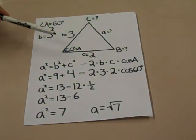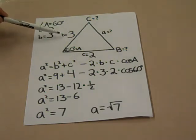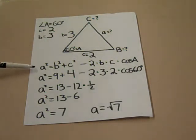Here we are given a triangle where angle A is 60 degrees, C is 2, and B is 3. Let's look at the formula. A squared equals B squared plus C squared minus 2BC times cosine A.